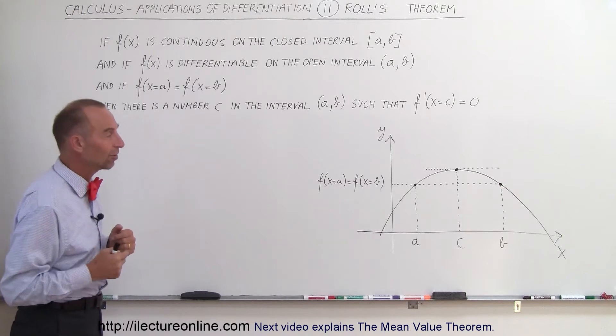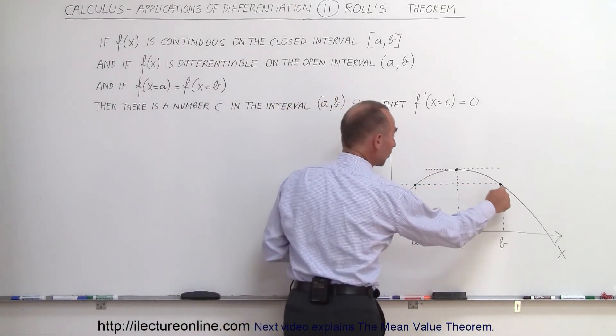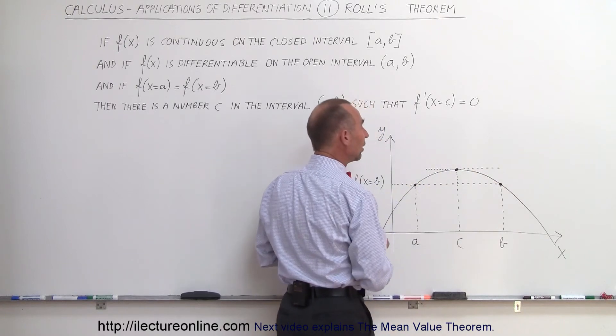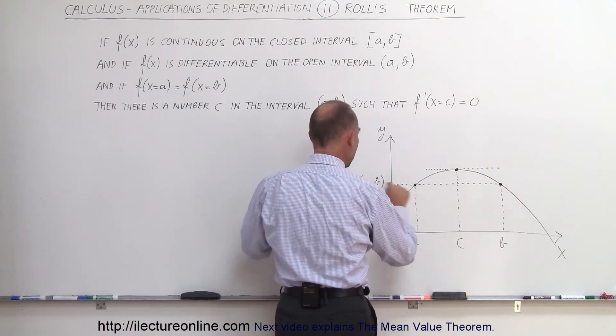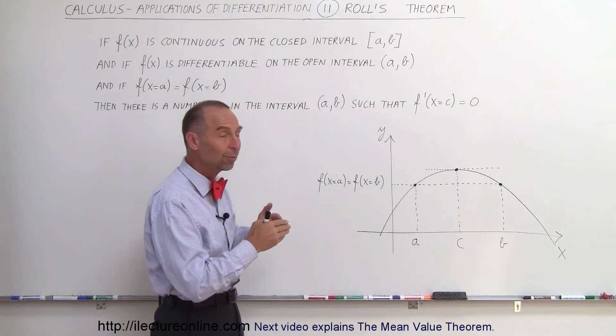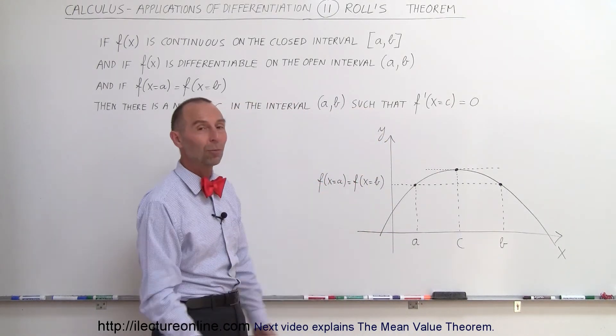In other words, the slope will be zero. What he's saying is, if there are two points on the graph, and the function is continuous between those two points, and they are at the same height, when you plug those values a and b into the function, there must be some point in between them where the slope is zero.